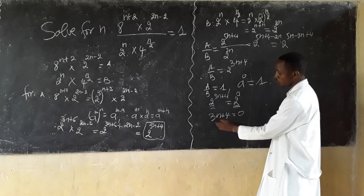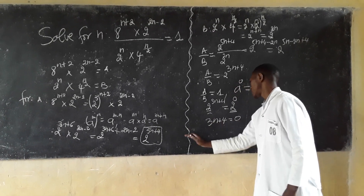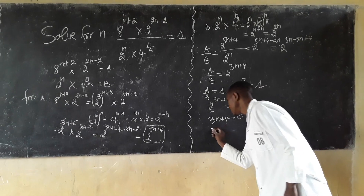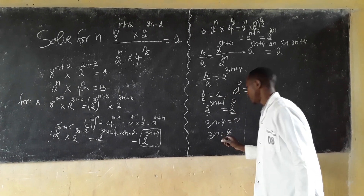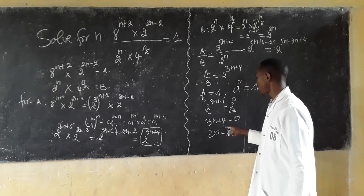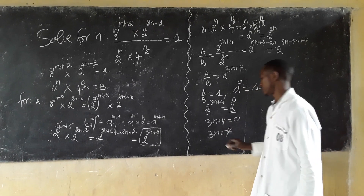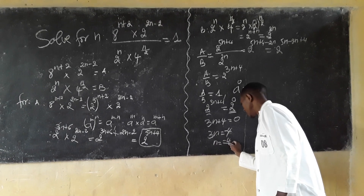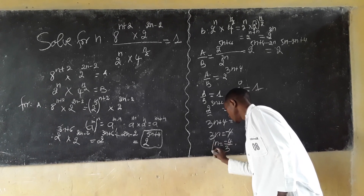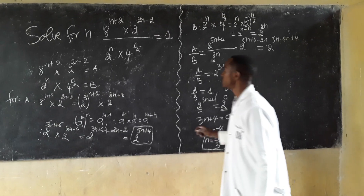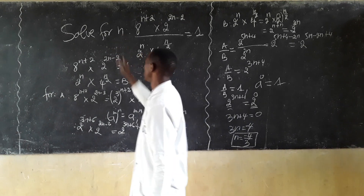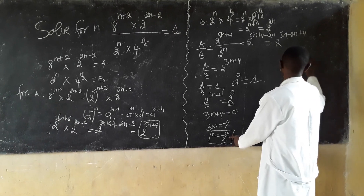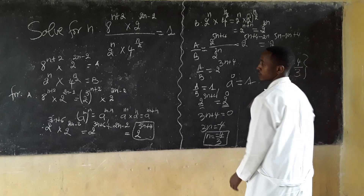This is a linear equation. Grouping the variable terms on one side and constants on the other: 3n equals negative 4. Dividing both sides by 3, the value of n, the solution, is n equals negative 4 over 3. Thanks.